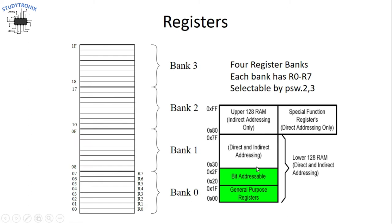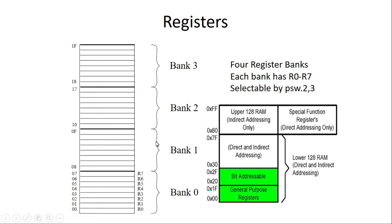The first section is called general purpose registers. These registers are divided into different subsections called banks. The number of locations in this section ranges from 00 hex to 1F hex, giving a total of 32 locations. Each bank has 8 general purpose registers named R0 to R7, and every bank shares the same register names R0 to R7. These banks can be selected using two bits present in the PSW register — PSW.2 and PSW.3 — allowing selection of any one of the four banks.